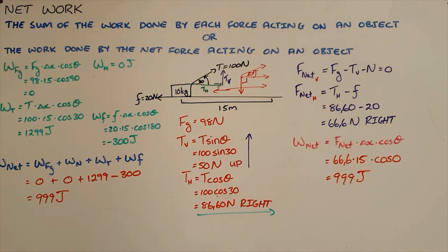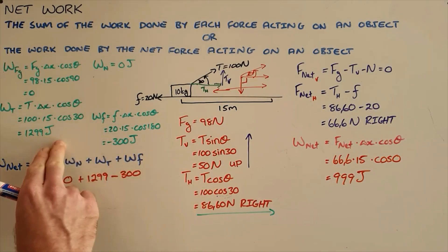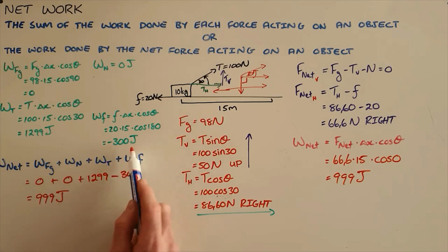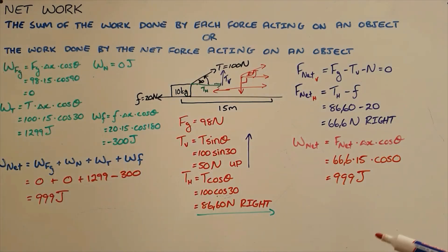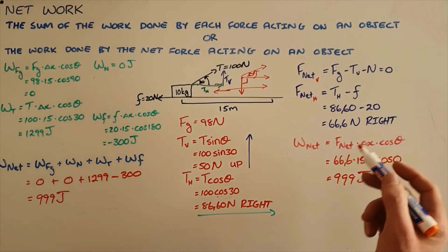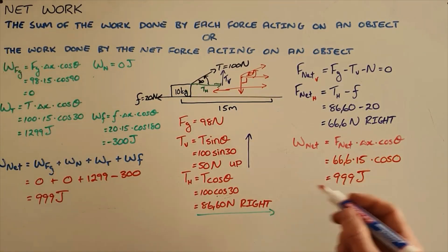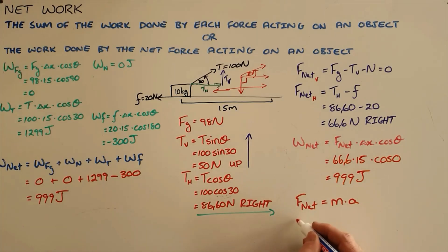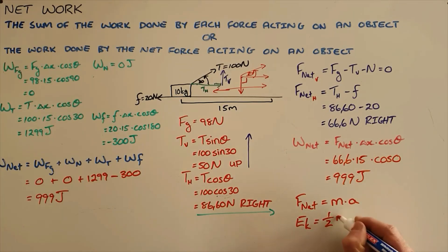Since work is a scalar quantity, a positive value means energy has been added to a system, and a negative value means energy has been removed. In these examples, the force moving the object to the right adds energy while the force acting against motion removes energy. That added energy can manifest in one of two ways: since there is a non-zero net force, by Newton's second law the object accelerates, meaning its velocity changes and its kinetic energy changes — kinetic energy being the energy resulting from an object's motion.